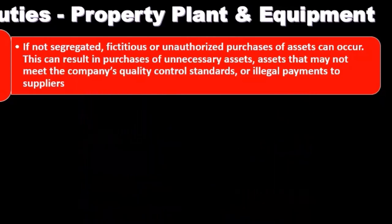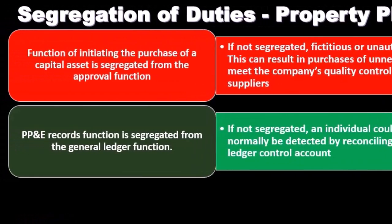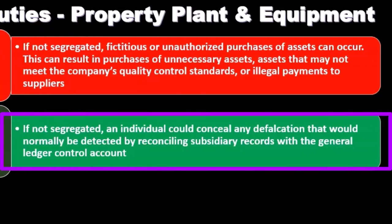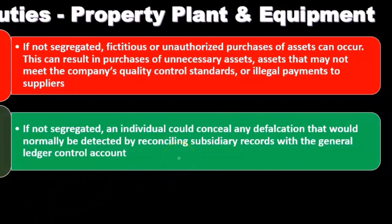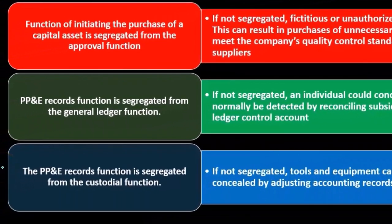Property, plant and equipment (PP&E) records function is segregated from the general ledger function. If this was not segregated, an individual can conceal any defalcation that would normally be detected by reconciling subsidiary records with the general ledger control account. That reconciliation process — the subsidiary ledger to the control account — should be a good control. If the same person is involved in both, they could adjust those accounts and that control would be less effective.